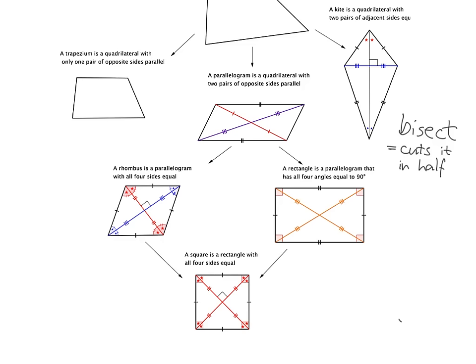And because all of these are also parallelograms — just special types of parallelograms — obviously the diagonals of these also bisect each other. So you always are going to get the diagonals cutting each other in half. Nothing special around the angles or anything there.